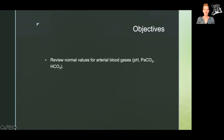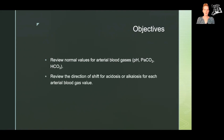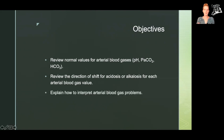We will cover what the normal values for arterial blood gases are, including pH, partial pressure of carbon dioxide, and bicarbonate. We will then review the direction of shift for each one of those values, whether it's trending toward acidosis or alkalosis. And finally we will put everything together to explain how to interpret the arterial blood gas problems.